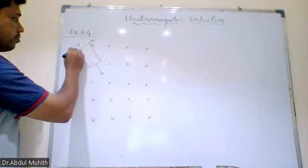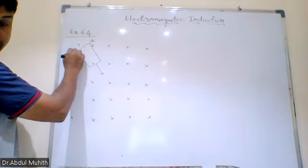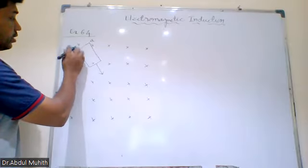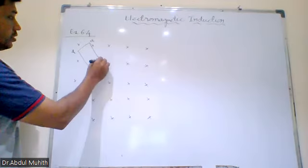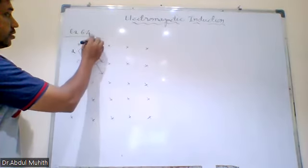A, B, C and D — this is the coil again: A, B, C.